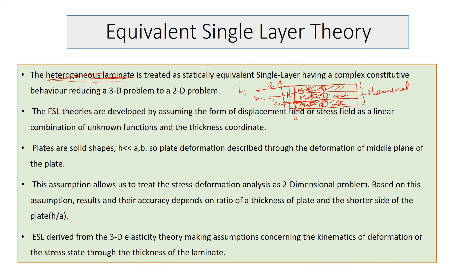Each individual lamina is homogeneous within itself. Although at the microscopic level it is not perfectly homogeneous, we have homogenized the fibers and matrix, so in an average sense the lamina is homogeneous. The laminate, however, is heterogeneous because the material value changes as we cross from one layer to the next.